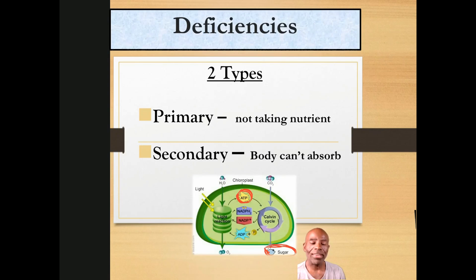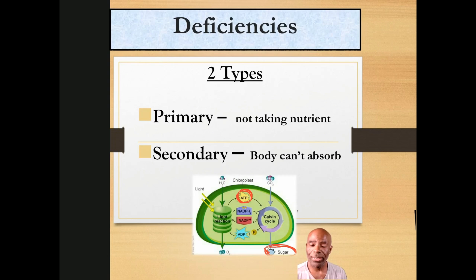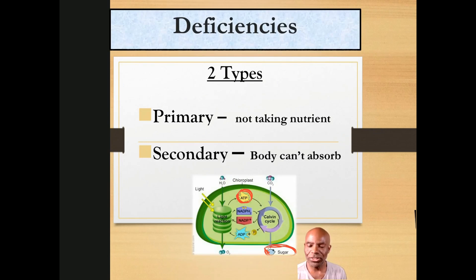For example, golden seal is really hard to get because it's over-harvested. A lot of manufacturers will put fillers — instead of having golden seal 100% in that capsule, they put another herb that's similar to golden seal because it's cheaper. That could cause your body to have a secondary deficiency where you're not absorbing or utilizing the nutrient properly.